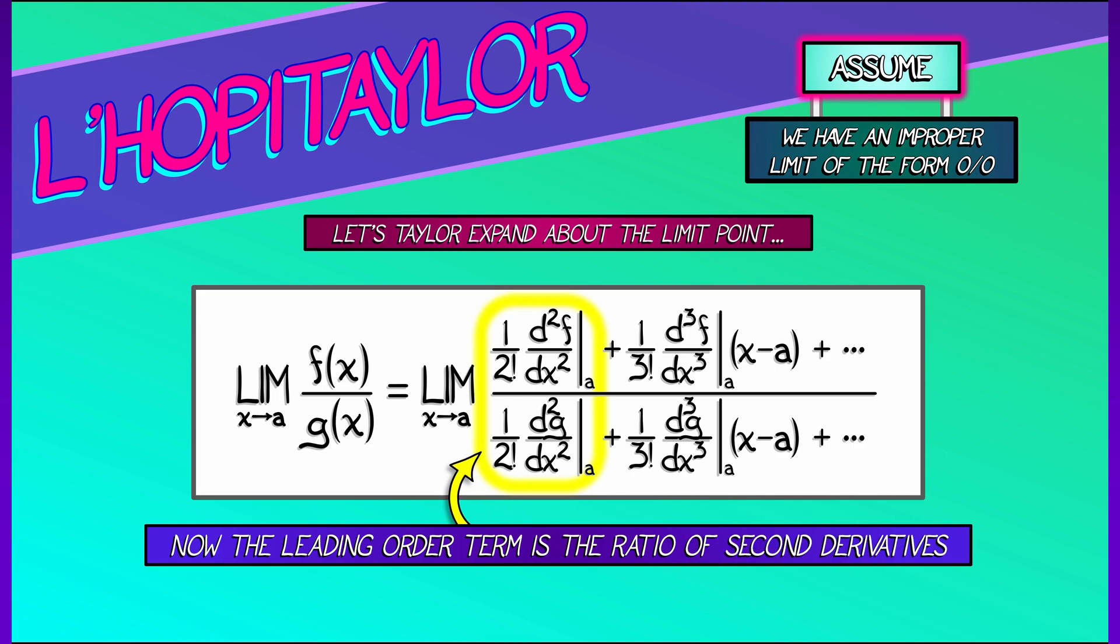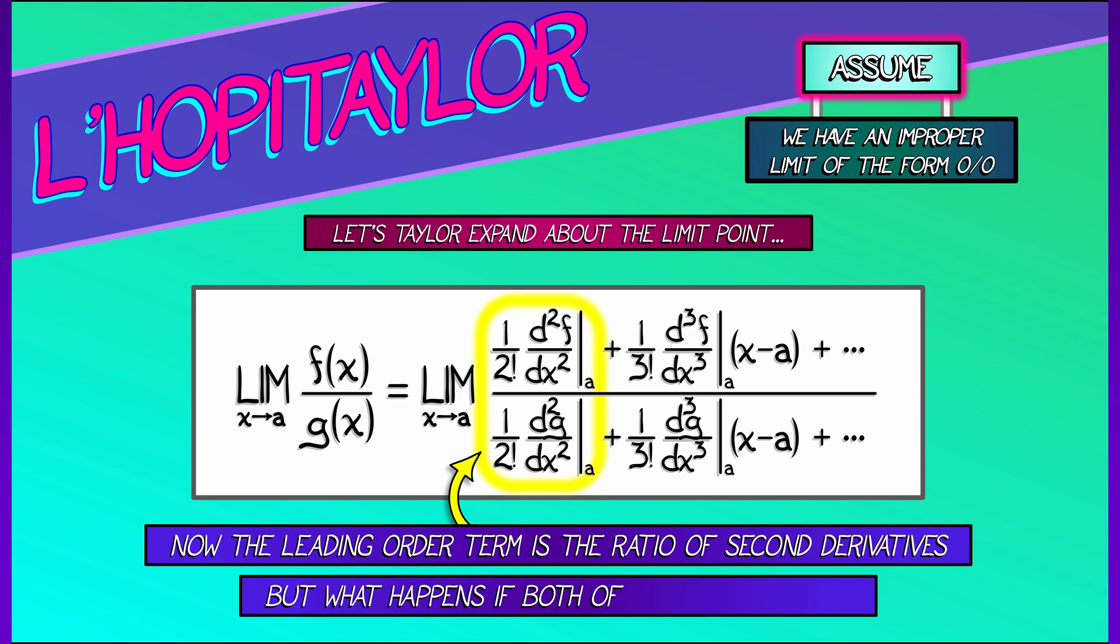Now you might be saying, hey, wait. What about that 1 over 2 factorial? That wasn't in L'Hopital's rule. Well, that's fine. It cancels from the top and the bottom. And you may say, well, wait a minute. What if both of these second derivatives vanish? Then we repeat, we do it again. Until, in the end, hopefully, we get to something that works. Something that when we evaluate at x equals a, we get a sensible ratio. That ratio will be a ratio of derivatives. And that is why L'Hopital's rule works the way it does.